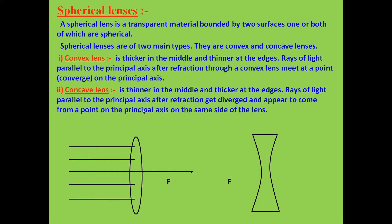Rays of light parallel to the principal axis, after refraction through a convex lens, meet at a point on the principal axis. The principal axis is a straight line passing through the center of the lens, known as the optical center, denoted by the letter O. The point where the rays join is known as the focus or principal focus, and this lens is known as a converging lens because all rays of light converge after passing through it.